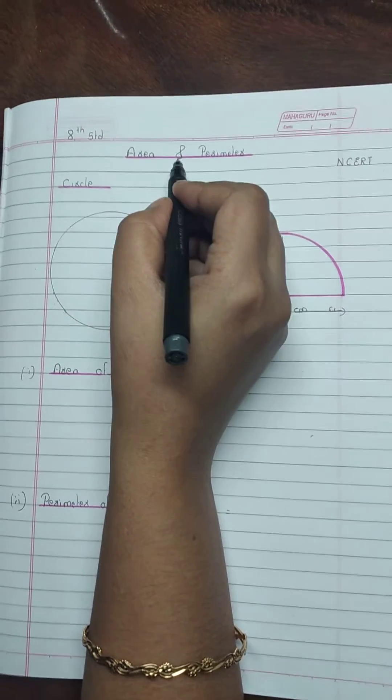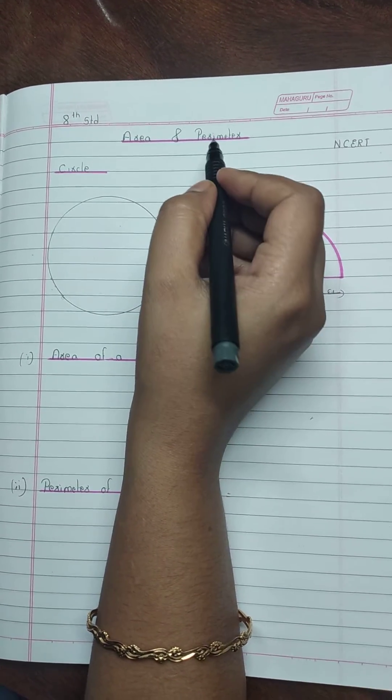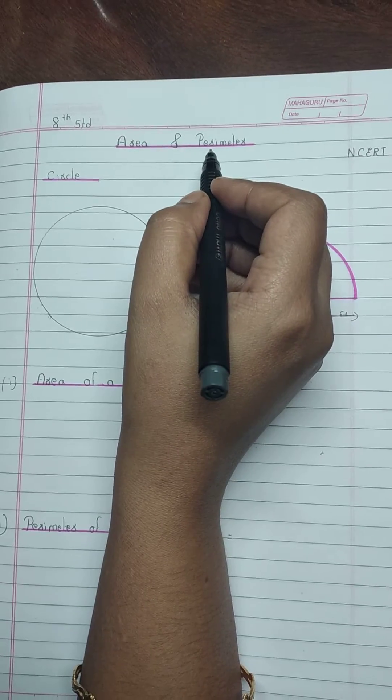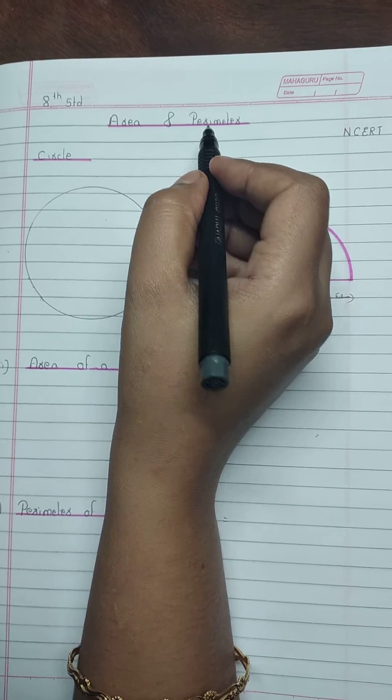The chapter name is area and perimeter. Today I am going to teach you how to find the area of a semicircle and perimeter of a semicircle.